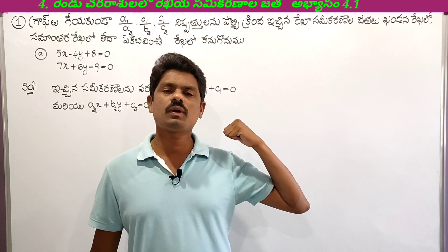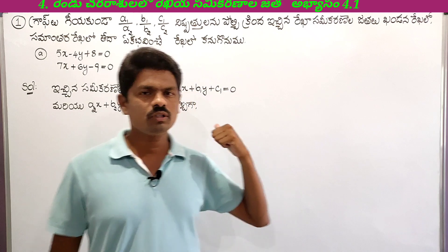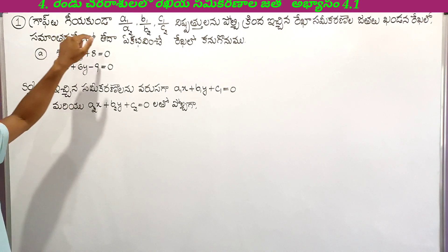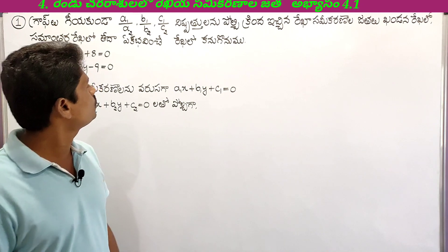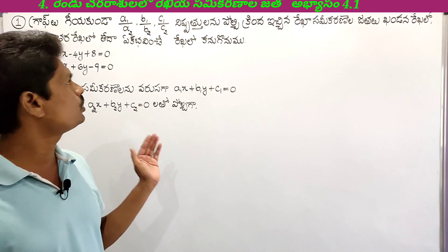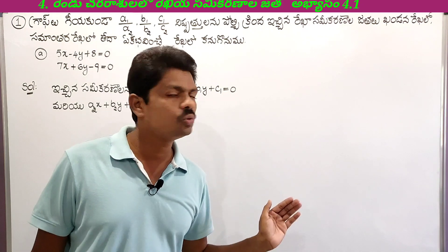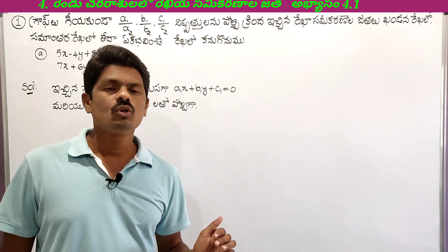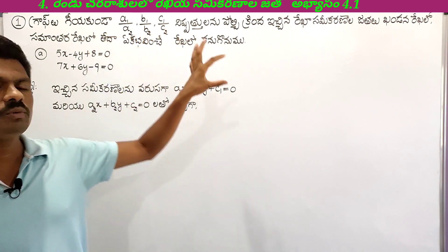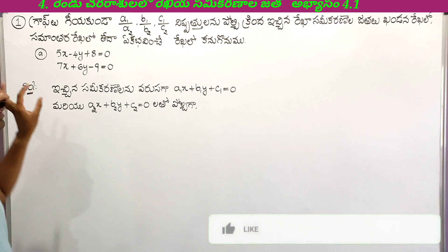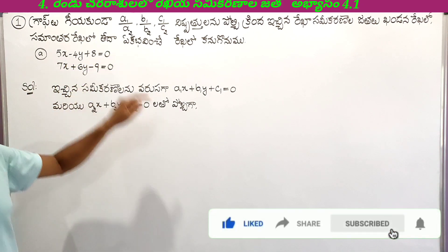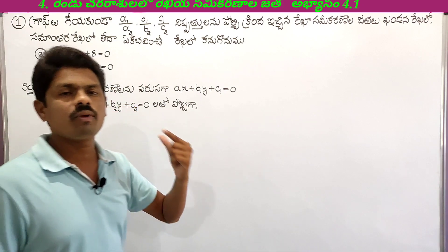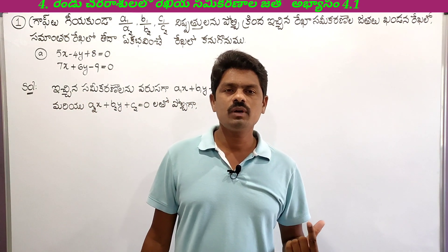We have already made the first problem. In the first problem, we have three bits: A, B, and C. This is A. A, B, C.